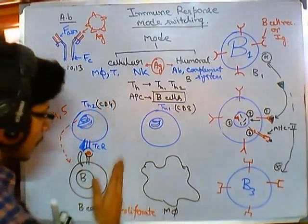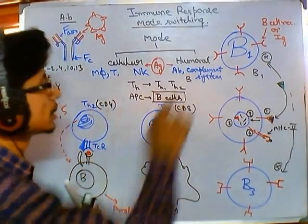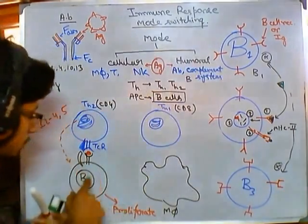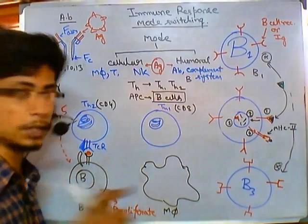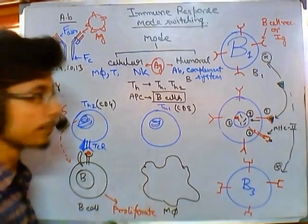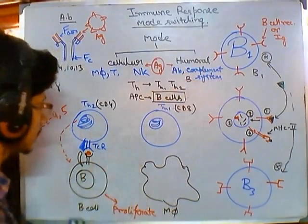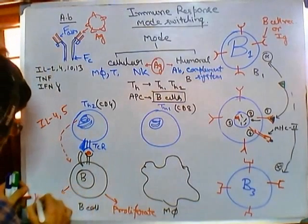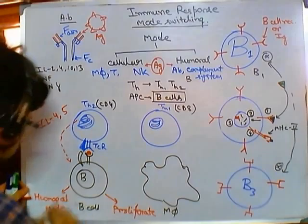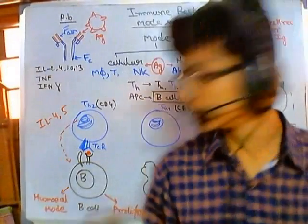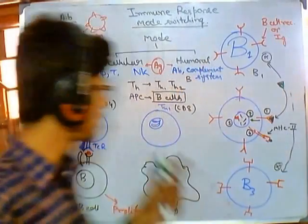This is one part of the section. If it happens in this way, the immune system will take the humoral mode of immune response. The B cells will proliferate, mature into plasma cells, and start to secrete antibodies or immunoglobulins. Then, using the complement system and opsonization, they will kill the pathogen. This is the humoral mode of immunity.